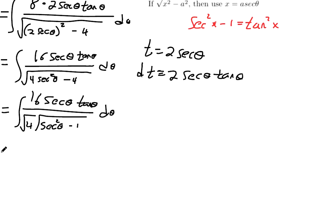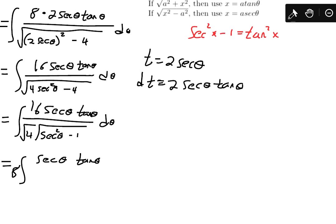And then we still have 16 secant theta tangent theta. And so, simplifying the constants, this is 16 divided by 4. So let's just factor out the 8 in the numerator. 16 divided by 2 gives us 8. And then we got secant theta tangent theta. And then check out the bottom. This is secant squared theta minus 1. I wrote that Pythagorean identity up here. And if you don't recognize that form, maybe you recognize it like this. Same thing, just rearranged a little bit.